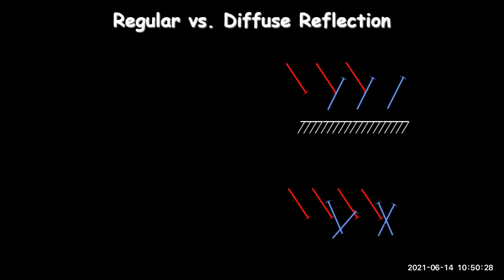Now we move to the second part — reflection and mirrors. There are two types of reflection: regular reflection and diffuse reflection. The first figure shows regular reflection and the second shows diffuse reflection.